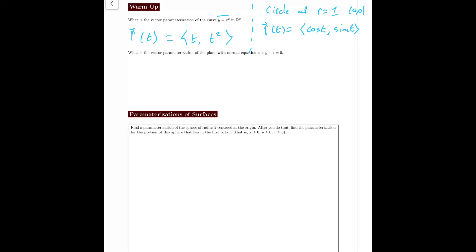The second thing to note is that a curve has one parameter—it's parameterized by one parameter. Let's go on to this next question: what is the vector parameterization of the plane with normal equation x plus y plus z is equal to zero?